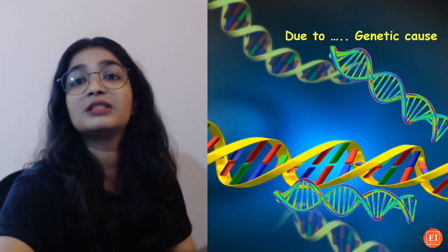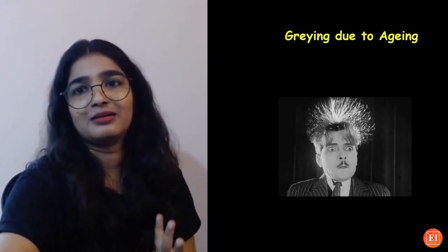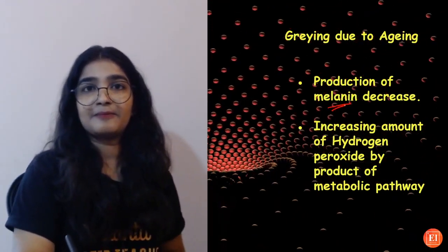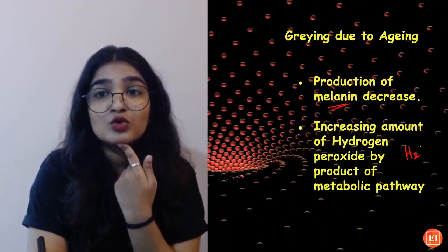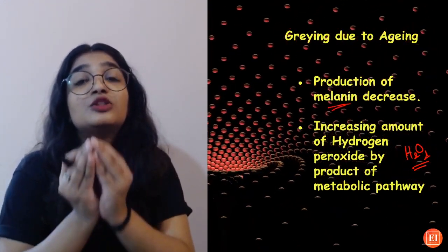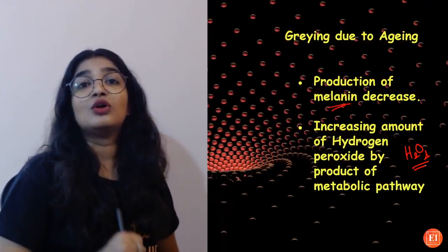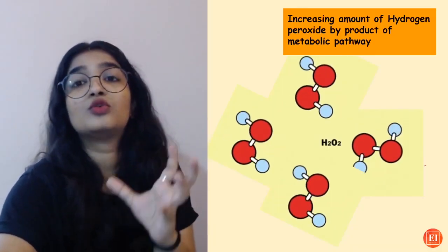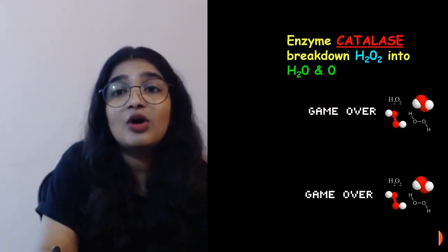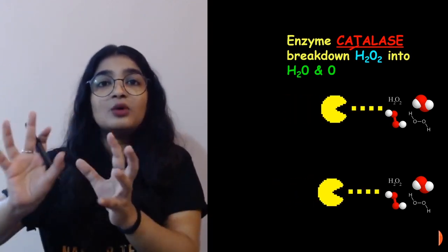My hair is dark brown, so I probably have higher eumelanin content. We even have a color chart you can check. But I have one gray hair — why? One reason could be genetic. Graying due to aging happens because when you age, the production of melanin decreases. There's also hydrogen peroxide — H2O2. If the amount of hydrogen peroxide released in your body is high, that also causes graying. In normal metabolic activity, hydrogen peroxide is released, but we have an enzyme called catalase that breaks it down into hydrogen and nascent oxygen.